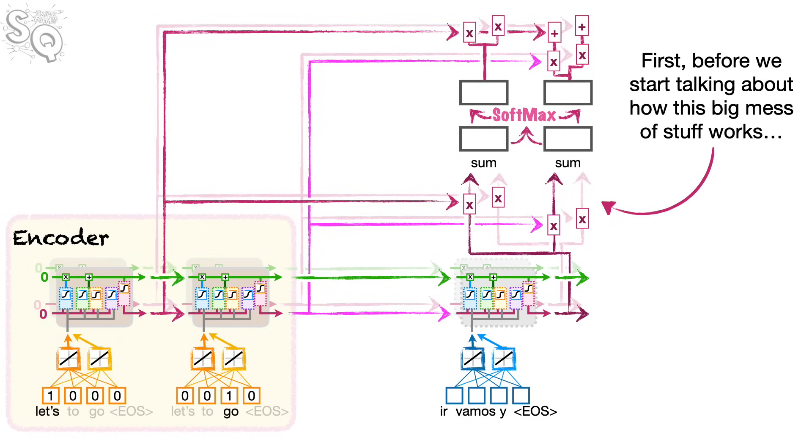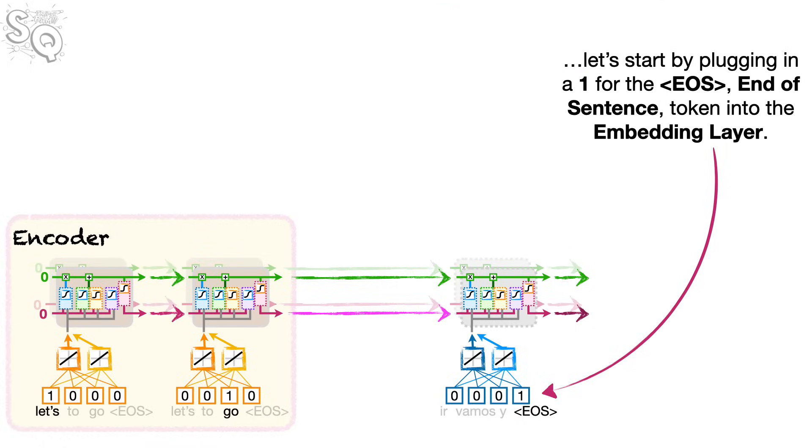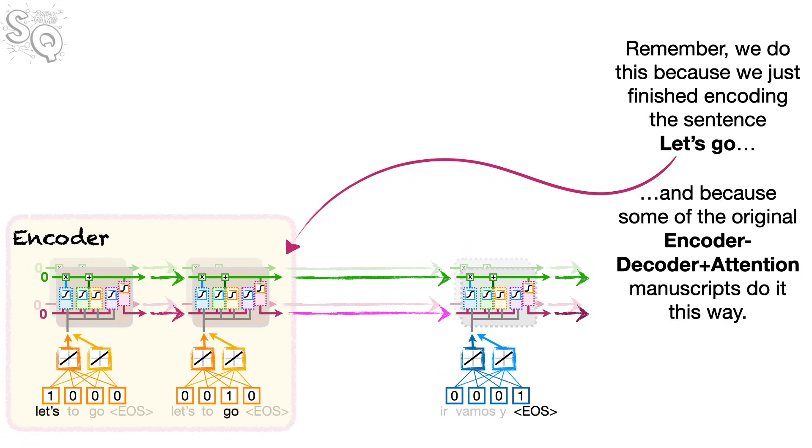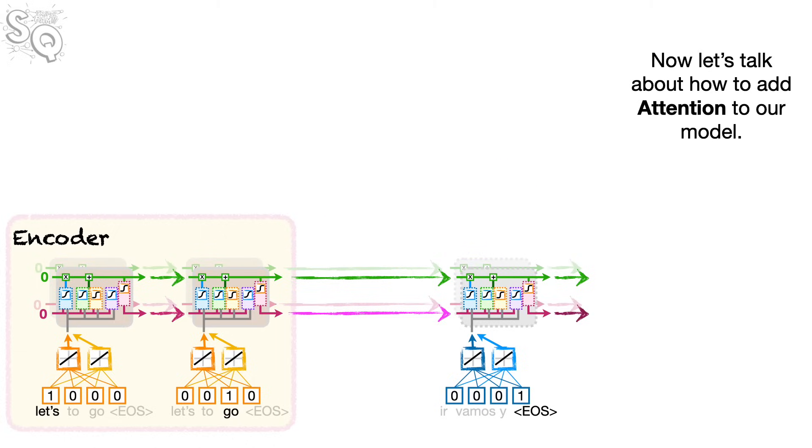First, before we start talking about how this big mess of stuff works, let's start by plugging in a one for the EOS end-of-sentence token into the embedding layer. Remember, we do this because we just finished encoding the sentence let's go, and because some of the original encoder-decoder-plus-attention manuscripts do it that way. However, some people also start out with SOS, or start-of-sentence. Now, let's talk about how to add attention to our model.